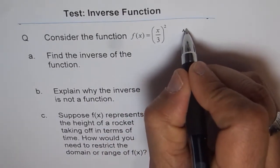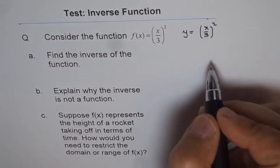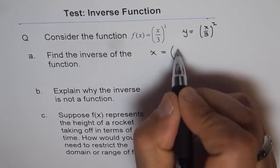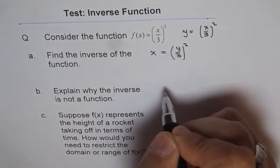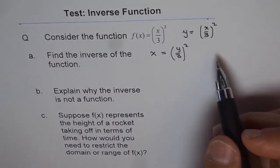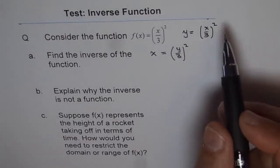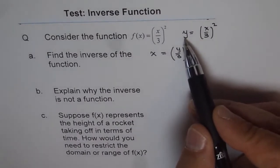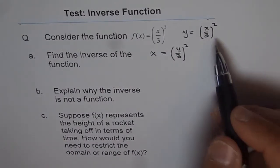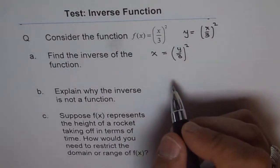The function given to us is y = (x/3)². Step one is swap x and y, so we write x = (y/3)², and now we will isolate y. There is also an alternate method: to find the inverse, we are basically finding what x is in terms of y, so you can directly find x in terms of y. But the method taught for most students is what I am following here.